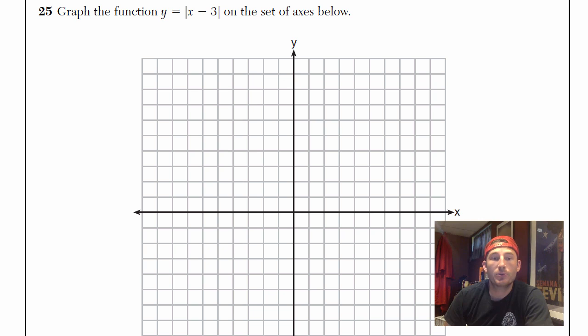Hey, this is Brian with Radical Prep. We're doing number 25 on the part 2 here. It says graph the function y equals the absolute value of x minus 3 on the set of axes below. So first thing I'm going to do is make the screen visible. I'm going to take this from the point of view if you had no idea about any tricks for this. You could do the t-chart, right?